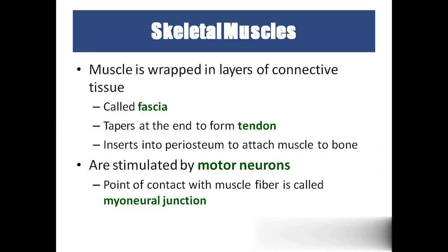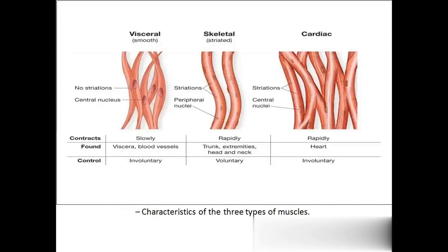The neuromuscular junction is also called myoneural junction. In this picture, a differentiation is shown: visceral or smooth muscle — no striations, involuntary; skeletal muscle — striations, voluntary; cardiac muscle — striations, but involuntary.